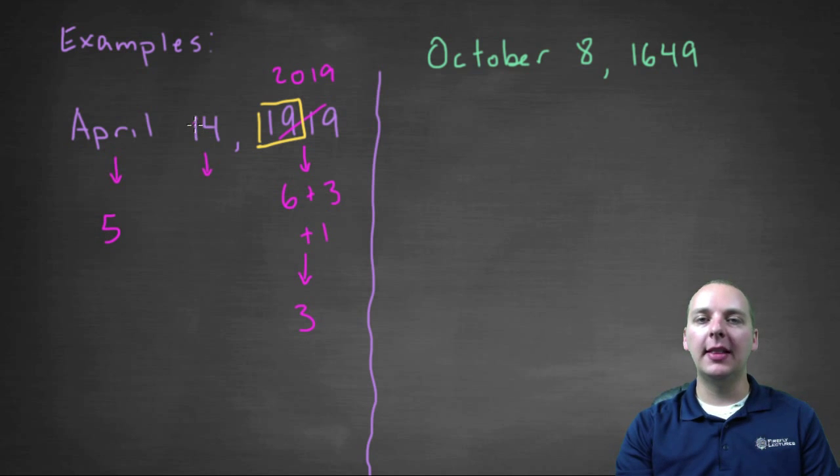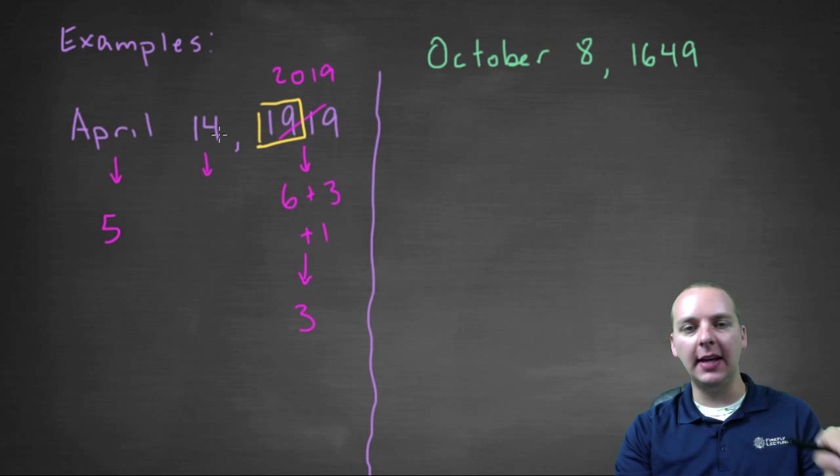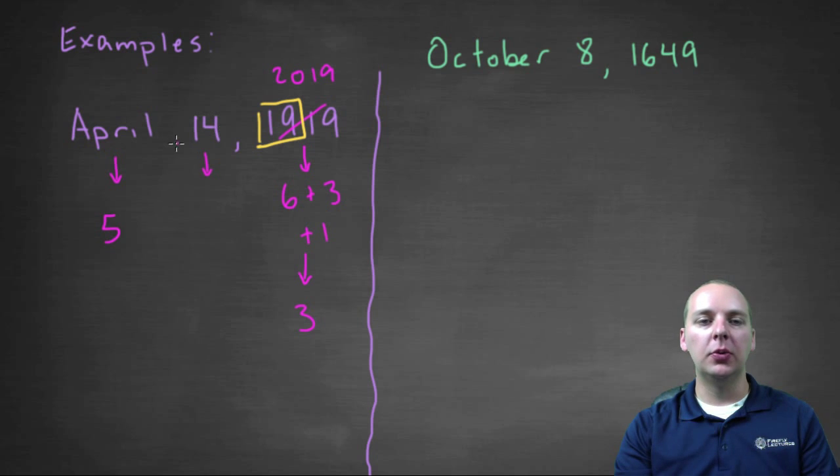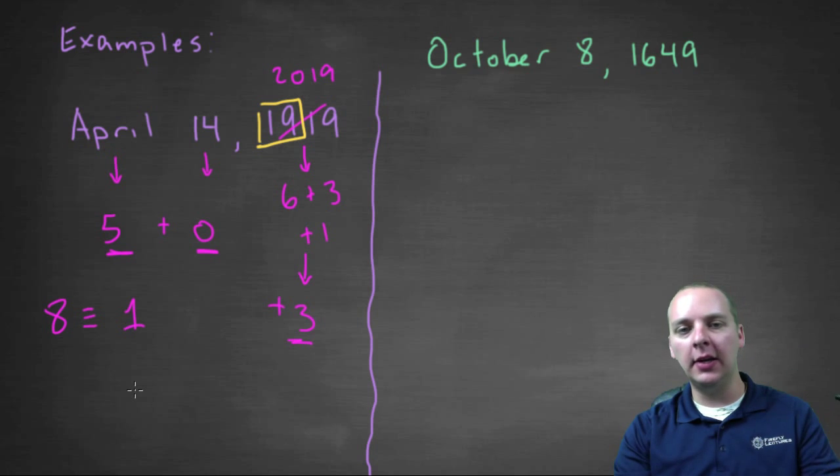The day code, you can take that modulo seven as well, because every seven days you wind up back on the same day of the week. So you could take the fourteenth was the same as a date of seven, or even a date of zero. Now I know you can't actually have zero on a calendar date, but for our purposes with day codes, it works perfectly fine. Okay, so we're going to add five and zero and three, and that will give us eight. We're going to take that modulo seven, so that would be equivalent to one. And one day is Monday, if you remember our mnemonic device.